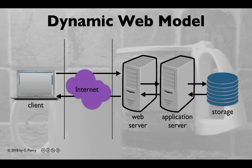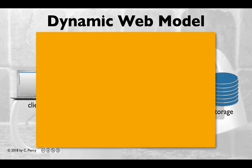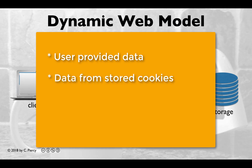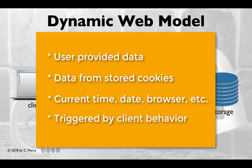A dynamic web application is one where the output provided to the client may be different at any moment based on the current status of data. Data that can determine what is viewed by the client may be data provided by the user in a form, data stored as cookies on the client's computer and accessed by the application, current data like date, time of day, the browser used, or the operating system used, or client behavior on the view that triggers related updates.